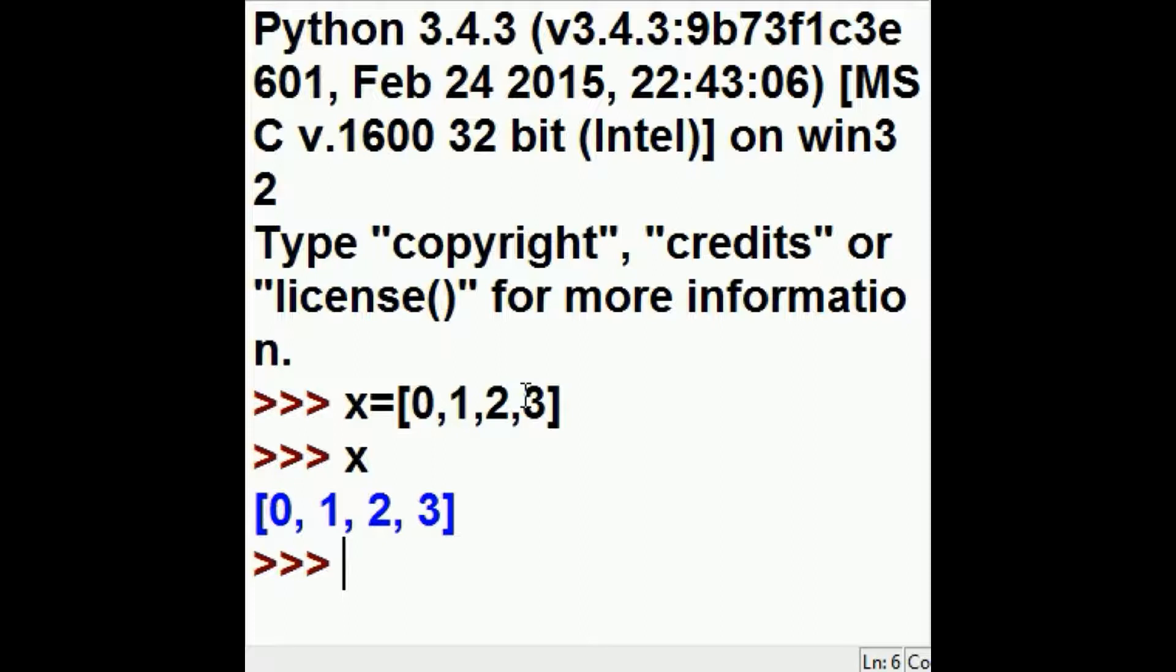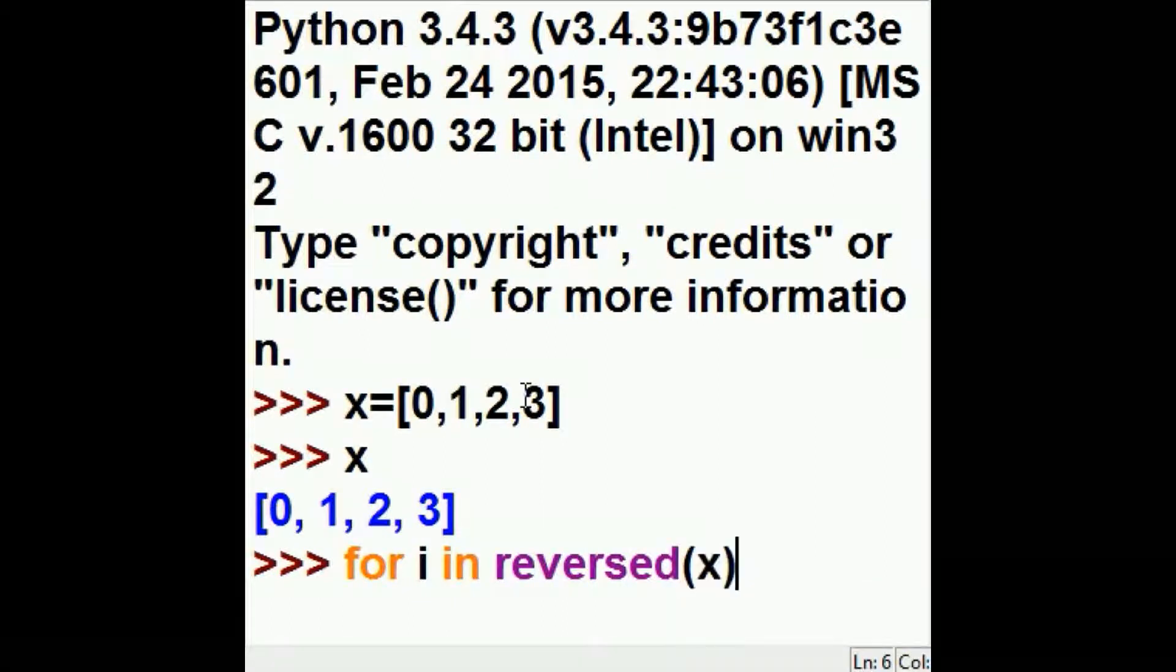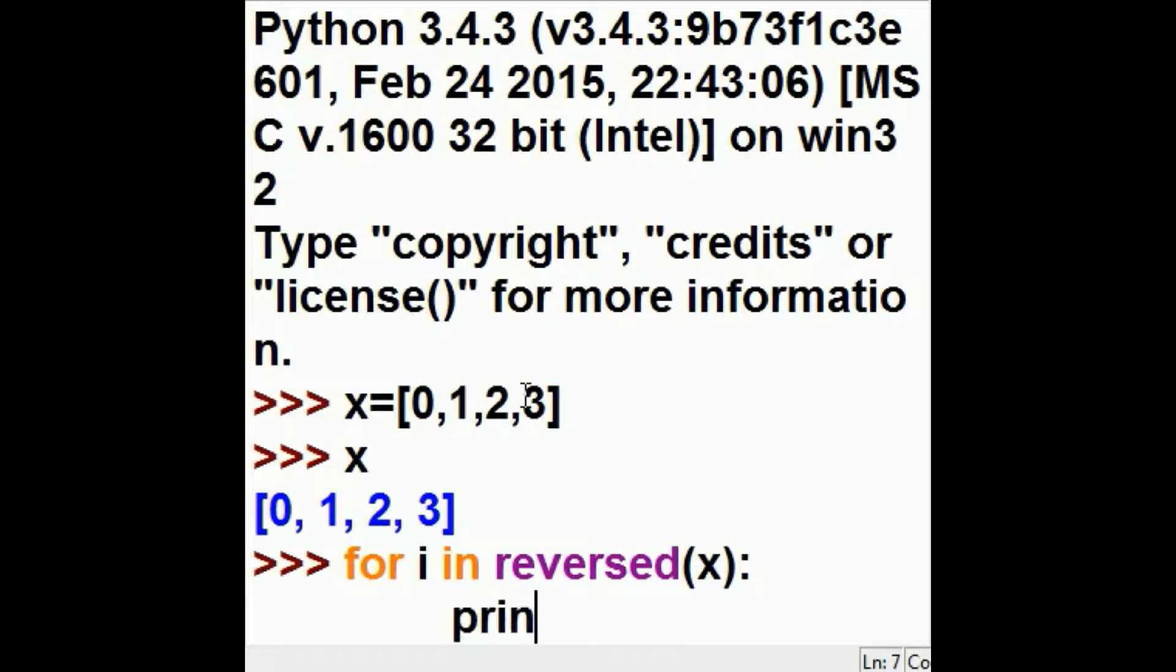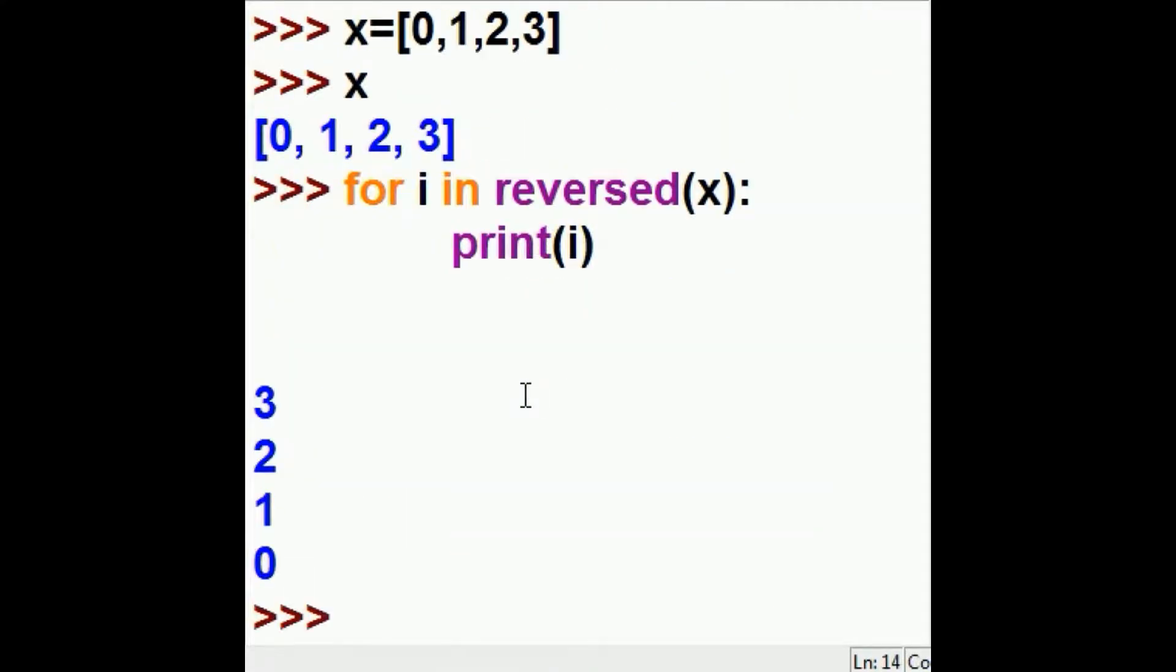I want to print those out in reverse order. So what do I do? For i in, take the reversed order of X, colon, and print out each one of those as i goes through that iteration. So for i in the reversal of X, reversed, print out i. I hit enter, and I should get, and I do,